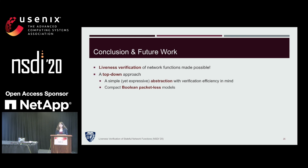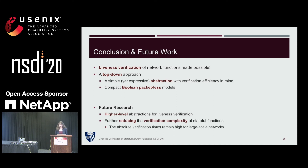To conclude, we showed that verifying complex properties such as liveness is feasible by applying a top-down approach that rethinks network abstractions with the efficiency of verification in mind, and encodes network state as compact Boolean packetless models. Some interesting opportunities for future work include designing higher-level abstractions for liveness verification and further reducing the complexity of verifying these functions.